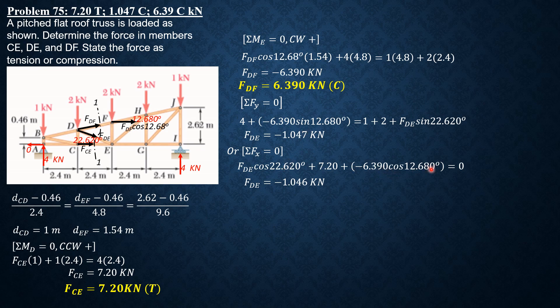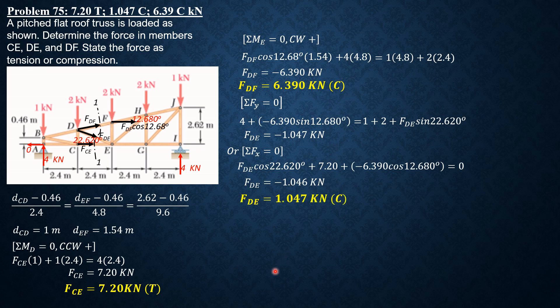The small discrepancy is due to rounding off of angles and force values, so they are practically equal. Using the first result, FDE = 1.047 kilonewtons compression. That's it for this problem.